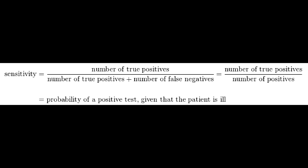In a 100% sensitivity scenario, the equation is true positive over true positive plus false negative. Since false negative equals 0, the equation equals 1 — representing 100% sensitivity. That means everything the test detects as positive are actual patients who have the disease.